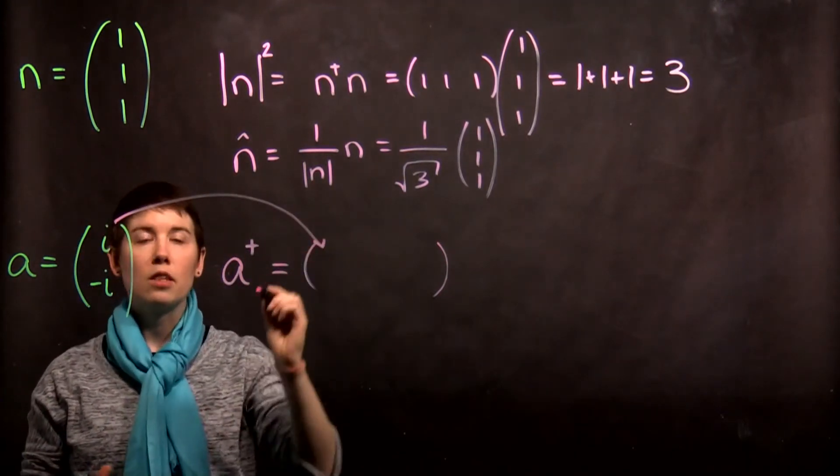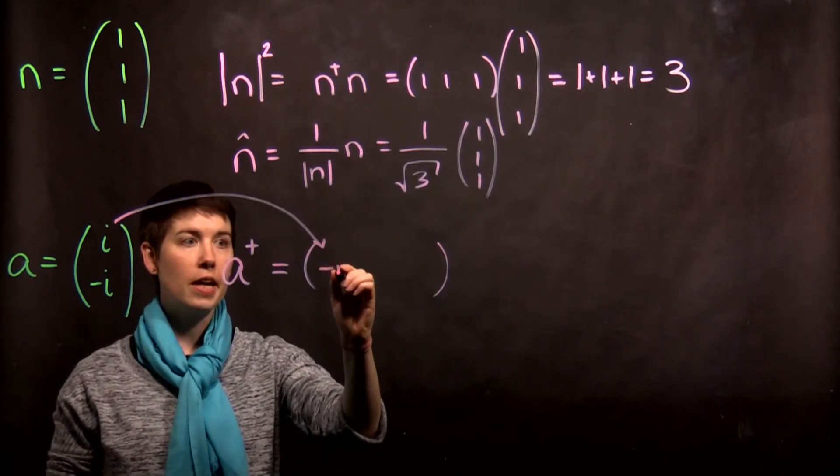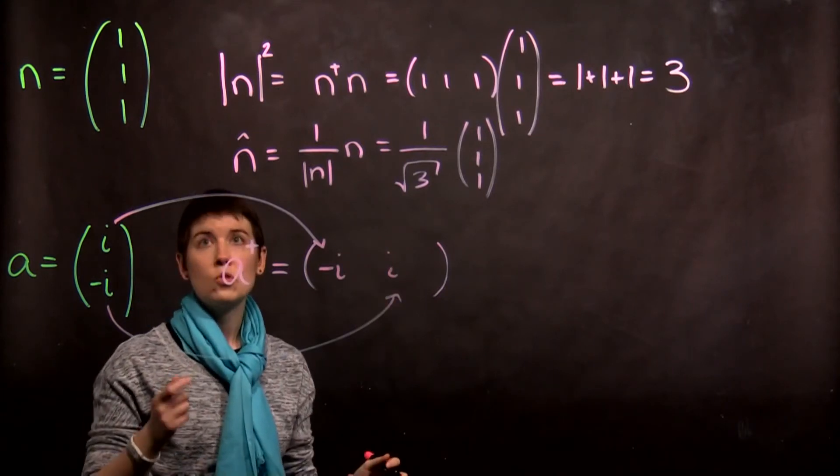And we need to make it the complex conjugate. So, the complex conjugate of i is negative i. The complex conjugate of negative i is i.